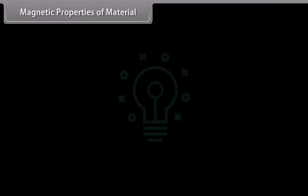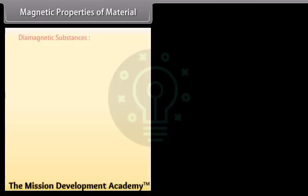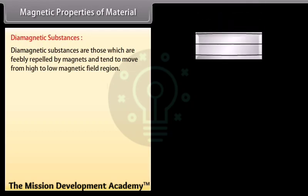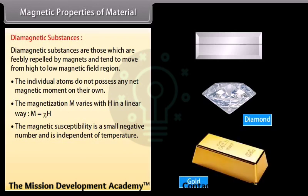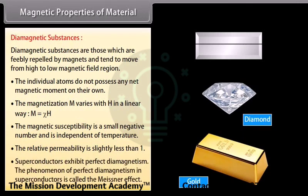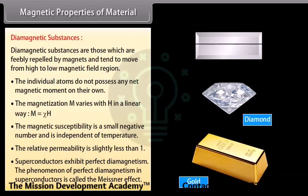Magnetic properties of materials — Diamagnetic substances: Materials can be divided into three categories: diamagnetic, paramagnetic, and ferromagnetic. Diamagnetic substances are feebly repelled by magnets and tend to move from high to low magnetic field regions. Individual atoms do not possess any net magnetic moment. Magnetization M varies linearly with H: M = χH. The magnetic susceptibility is a small negative number and is independent of temperature. The relative permeability is slightly less than 1. Superconductors exhibit perfect diamagnetism, a phenomenon called the Meissner effect.